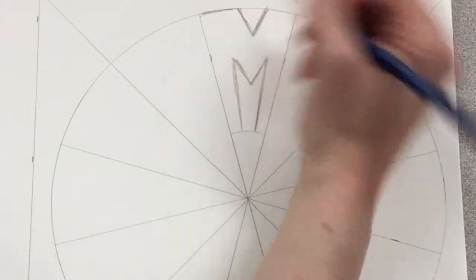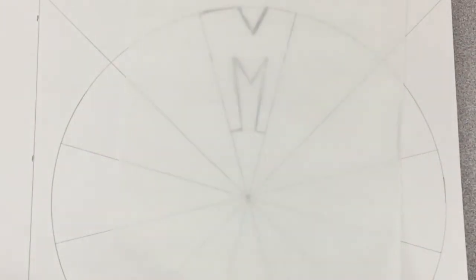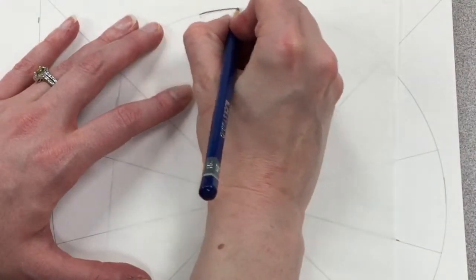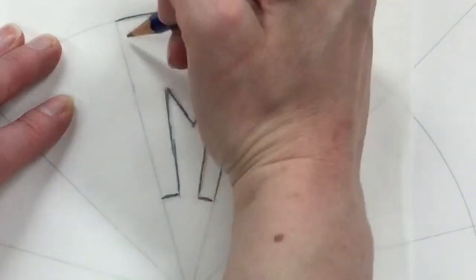I think this M looks pretty good, and I want it to look the same in all of my other sections. So I'm going to take a piece of tracing paper and lay it on top. I'm going to draw over my design, and I'm going to make sure that my lines are nice and dark so that I can see them.